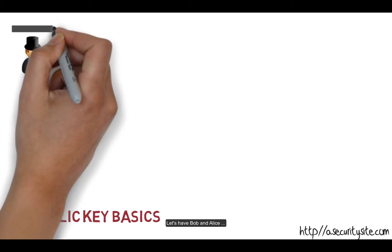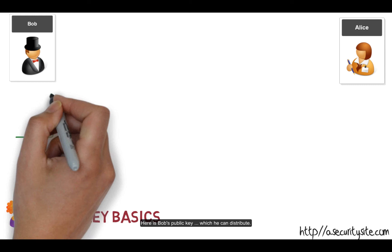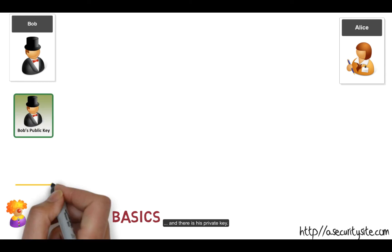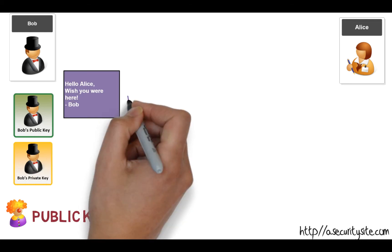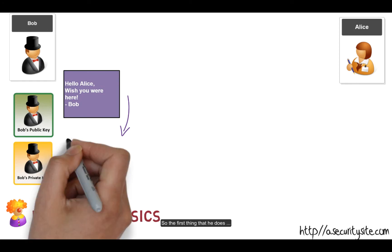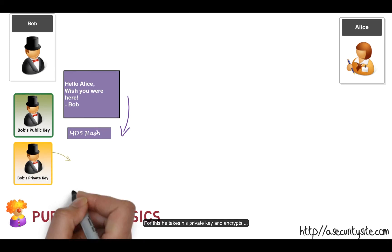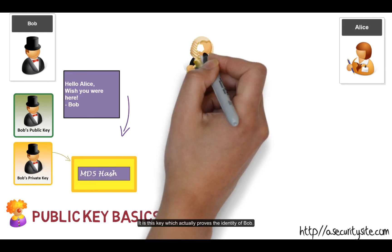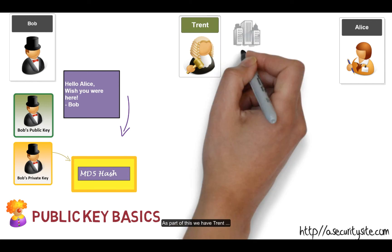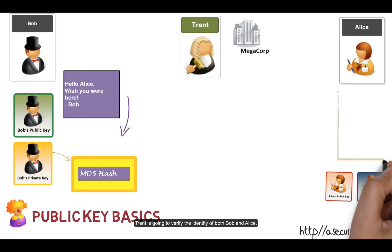Let's look at some public key basics when it comes to proving identity. Here's Bob and Alice. Bob has his public key, which he can distribute, and his private key. When Bob sends Alice a message, the first thing he does is take a hash signature — a thumbprint — of the message, and then he encrypts the hash with his private key. It's this private key which actually proves the identity of Bob. Trent, as part of MegaCorp, will verify the identity of both Bob and Alice.